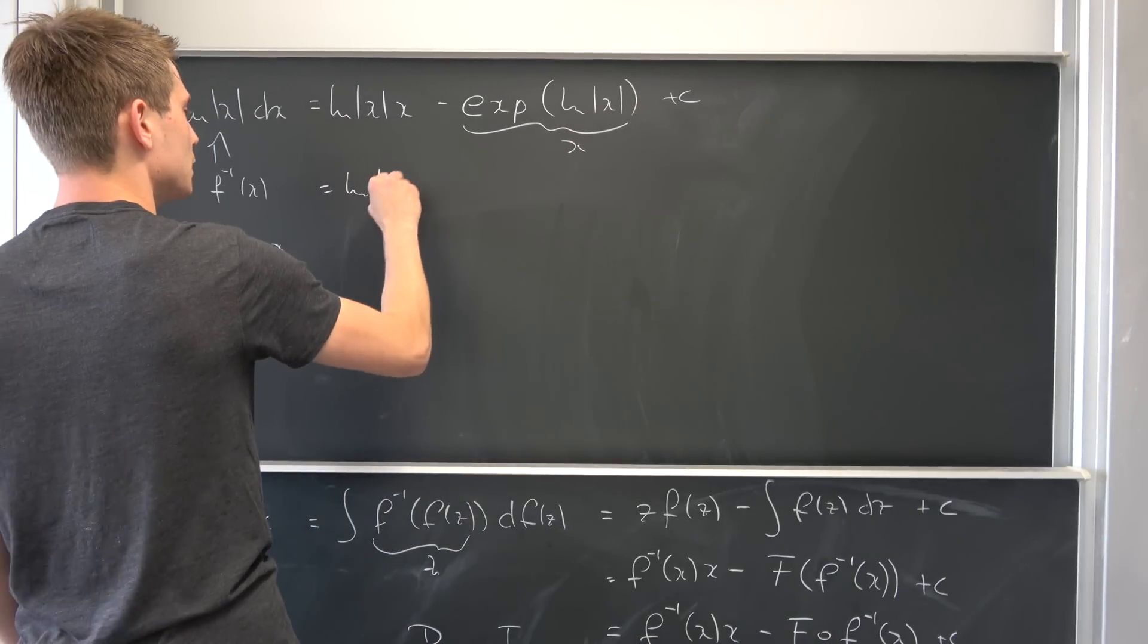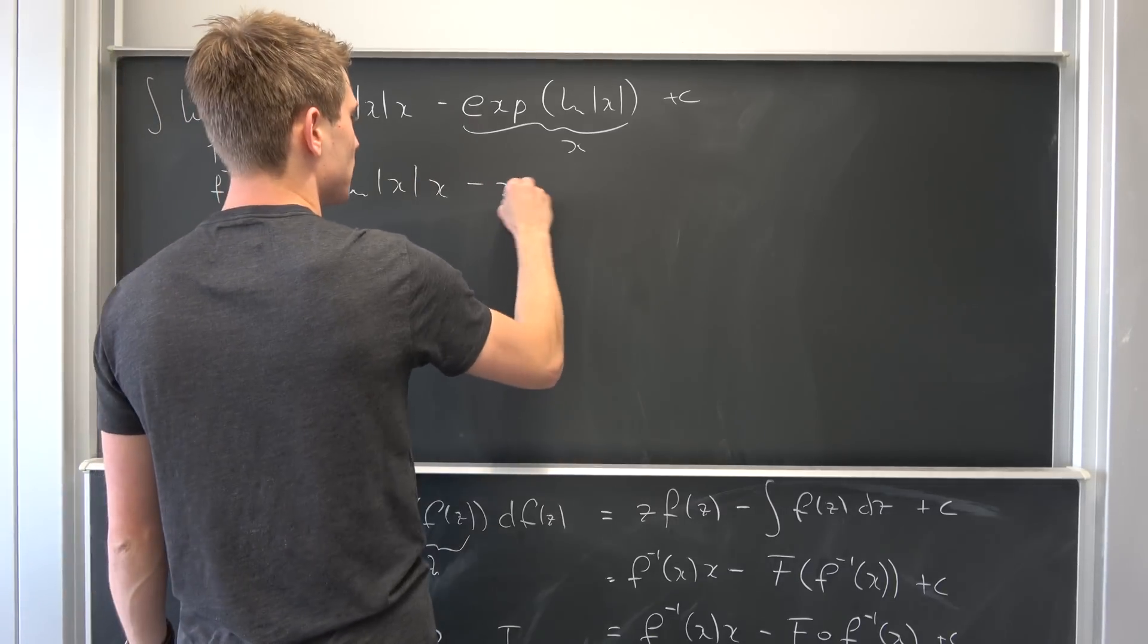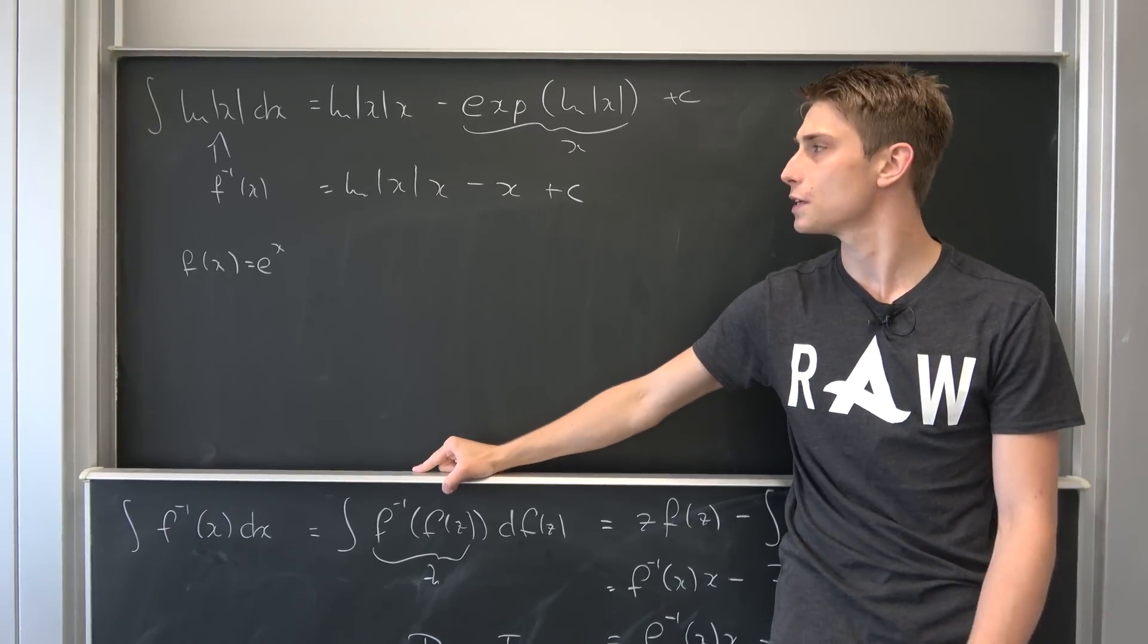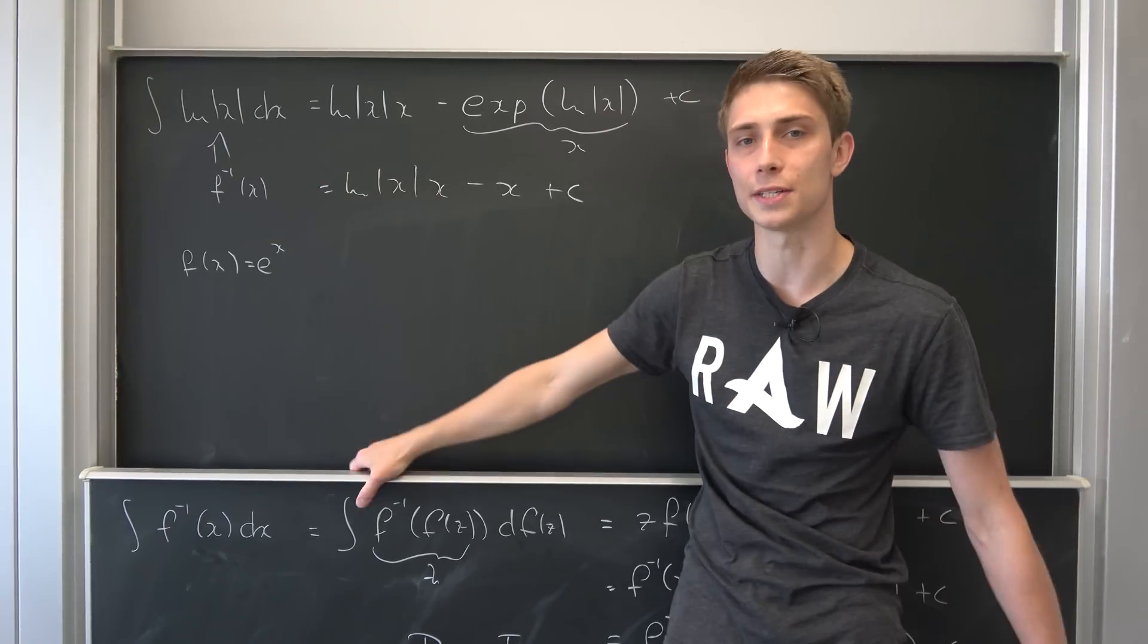So we end up with ln of x times x minus x plus some arbitrary constant c. And this thing right here is indeed the primitive to this function right here.